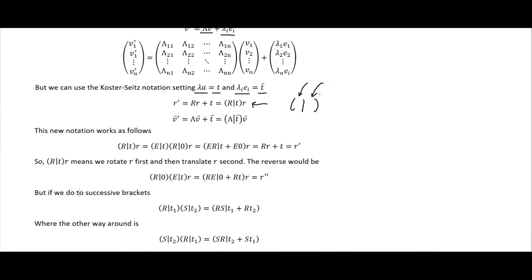The new notation works as follows: we have rotation and translation acting on point R. A pure rotation with zero translation acts as the rotation with no added translation. The identity element for rotation plus translation T acts on R, giving us R acting on R plus the translation — which is our R prime.